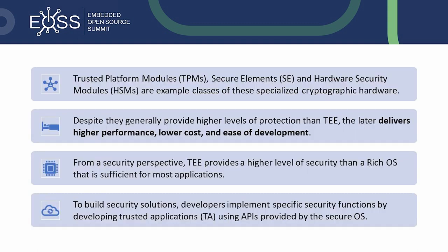There exist several ways to establish trusted computing. Depending on the trade-off between the level of security, performance, and cost, we may introduce inside the platform an external tamper-proof component designed to protect the system through embedded cryptographic keys. Trusted Platform Modules (TPM), Secure Elements (SE), and Hardware Security Modules (HSM) are examples of this specialized cryptographic hardware. Despite generally providing higher levels of protection than the TEE, the latter delivers high performance, lower cost, and ease of development. From a security perspective, the TEE provides a higher level of security than a rich OS, which is sufficient for most applications.